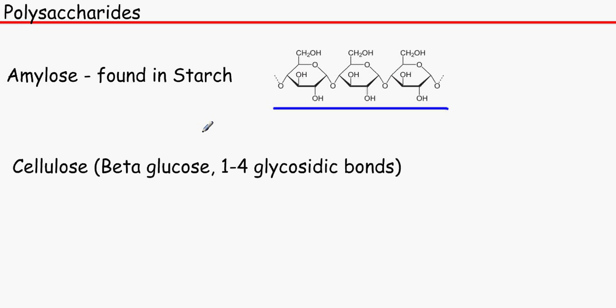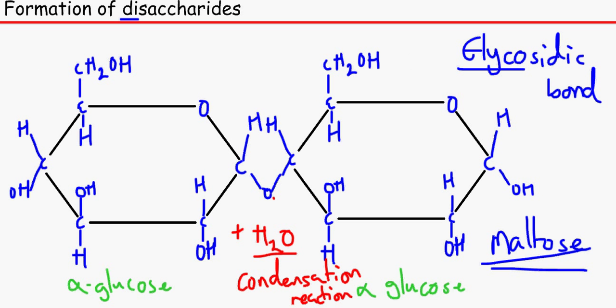Cellulose is also a polysaccharide and it's beta glucose, two beta glucoses forming 1-4 glycosidic bonds. That's what I forgot to write, this is an alpha 1-4 glycosidic bond because it's formed on the first one and the fourth one. 1-4 glycosidic bonds.